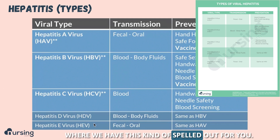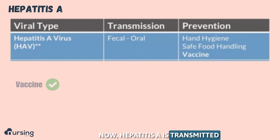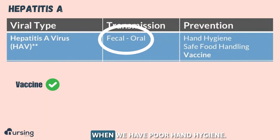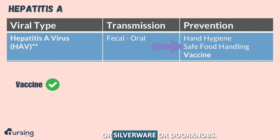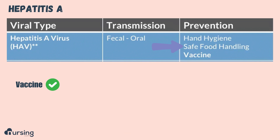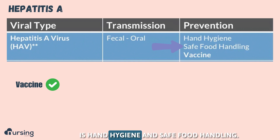Hepatitis A is transmitted through the fecal-oral route. Usually this happens when we have poor hand hygiene. This can happen with food handlers, or via silverware or doorknobs — eventually you put food in your mouth, or your hands touch your mouth after touching a doorknob. So the best thing we can really do is hand hygiene and safe food handling.